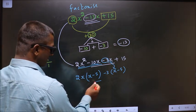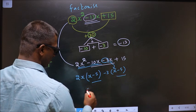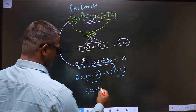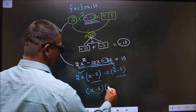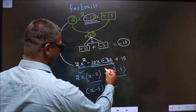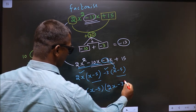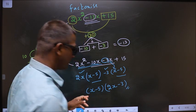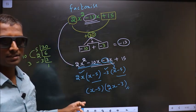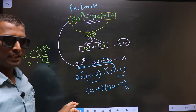Now take x - 5 common. So here you're left with 2x, and here you're left with -3. This is our answer: (2x - 3)(x - 5).